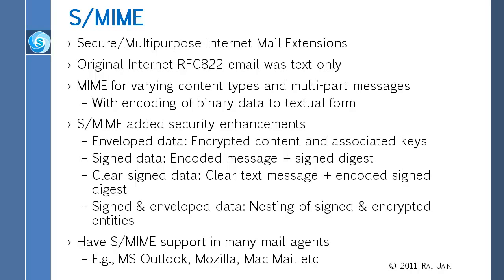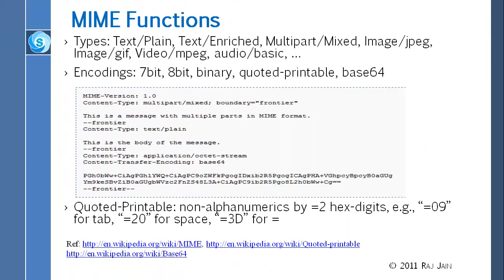S-MIME is now supported in many mail agents. Today, whatever you use, like Outlook or similar programs, they generally use MIME. That's the idea of the standard. MIME itself, when you send a message, is encoded with a MIME version header, a content type of multipart/mixed, a boundary called 'frontier' — indicating this is a multipart MIME format message.